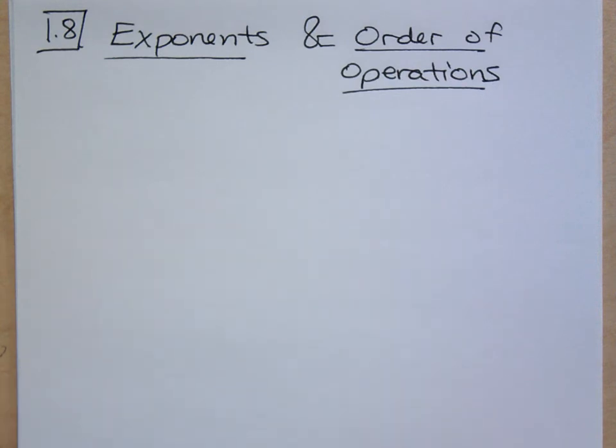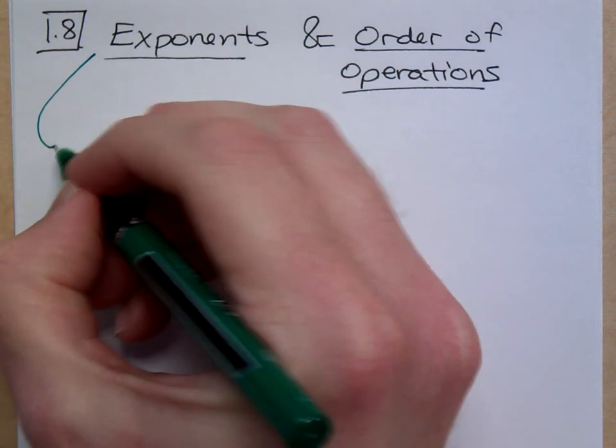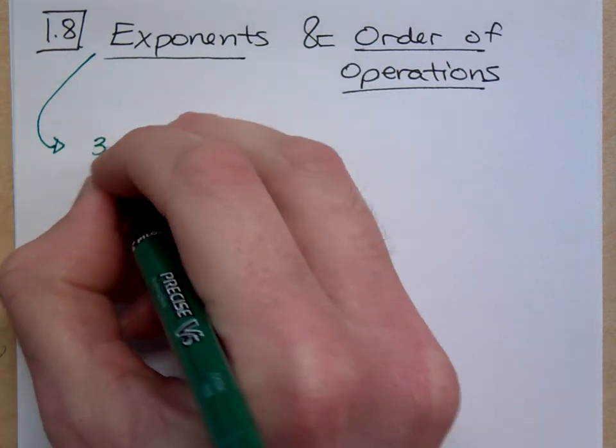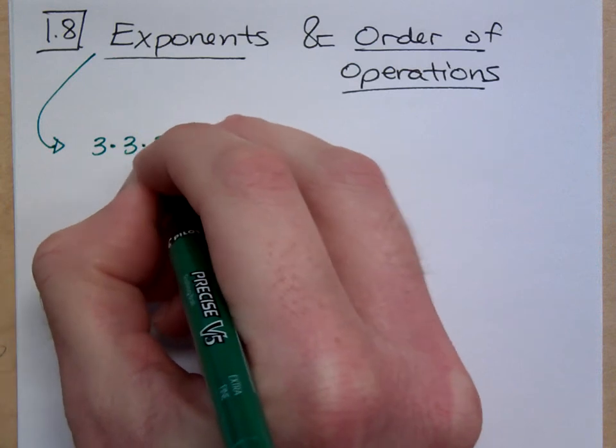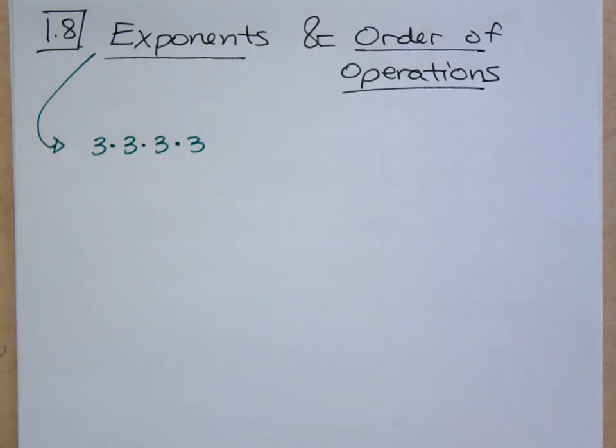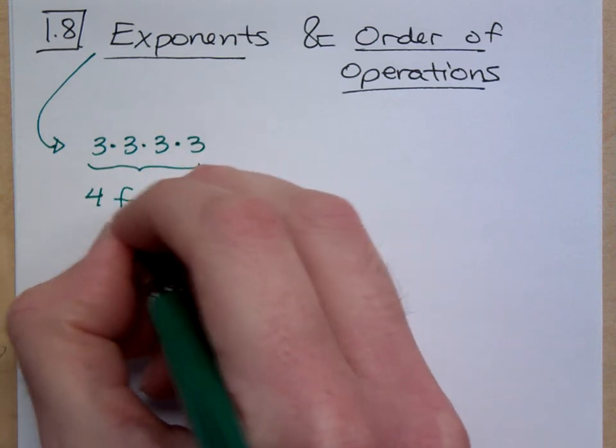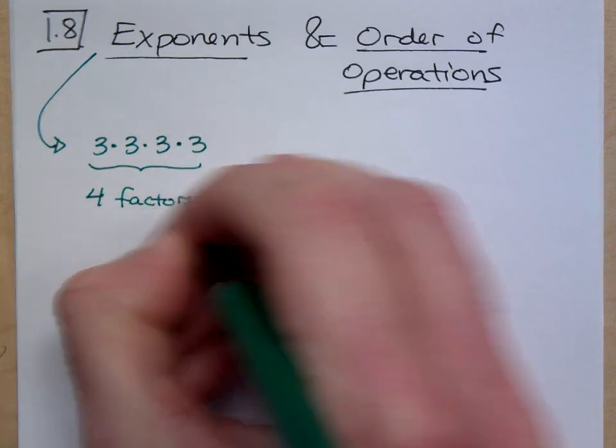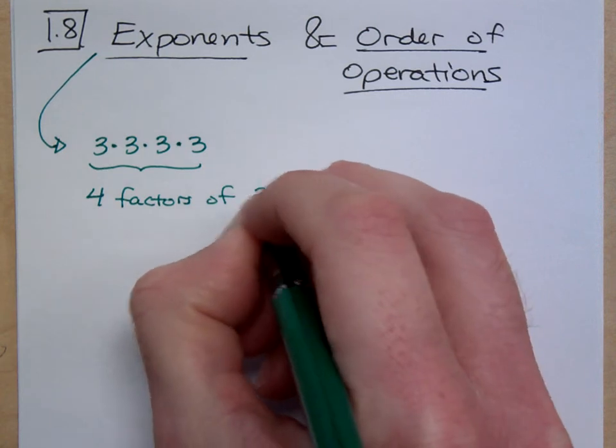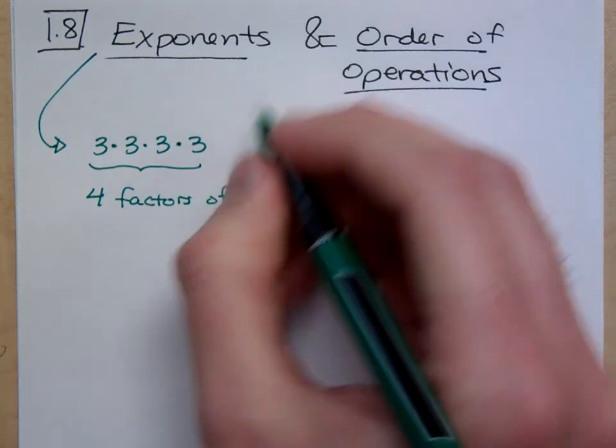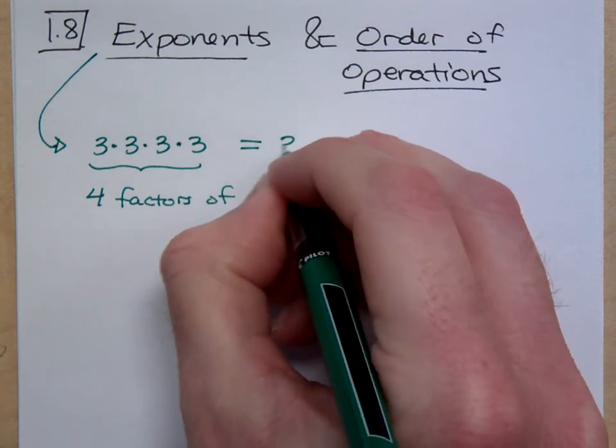First we'll start talking about exponents. Exponents is when you take something like this: if I'm multiplying 3 times 3 times 3 times 3, notice that what I have here is that I have 4 factors of 3. Remember how we said that a factor was a piece of the multiplication problem, it was a piece of the product?